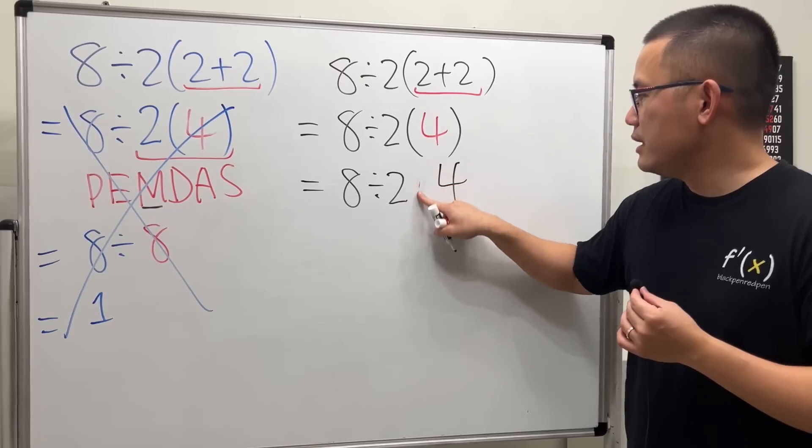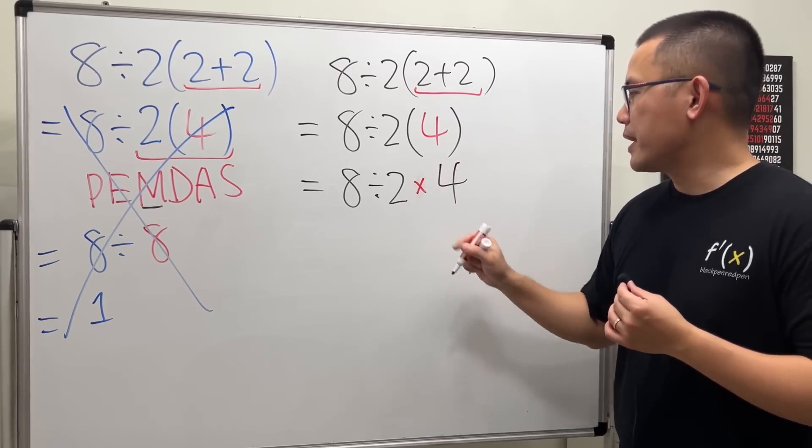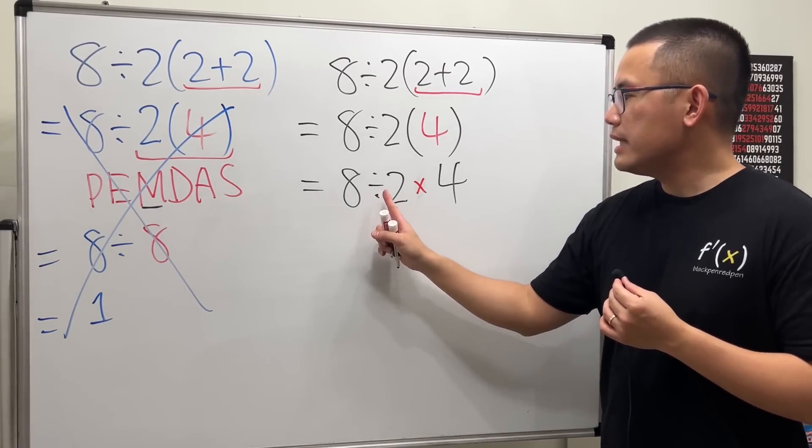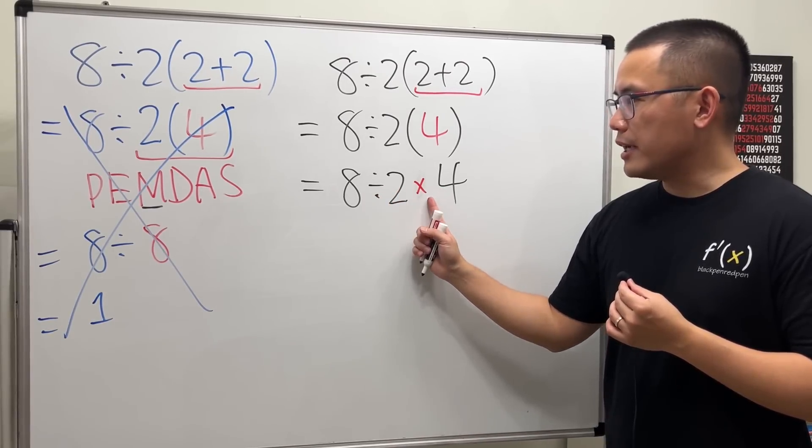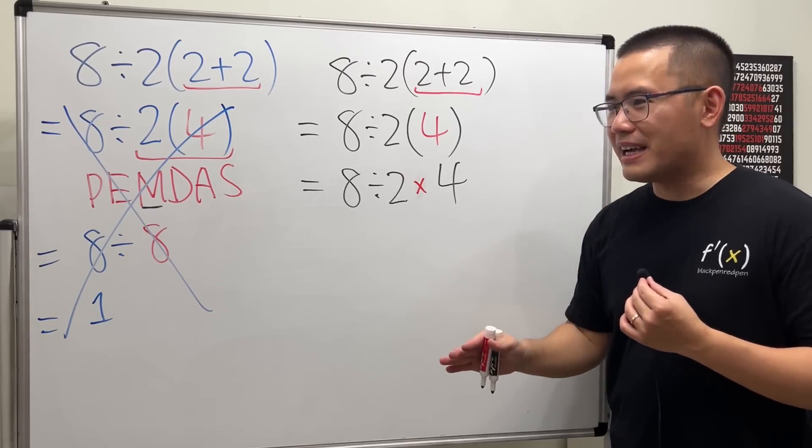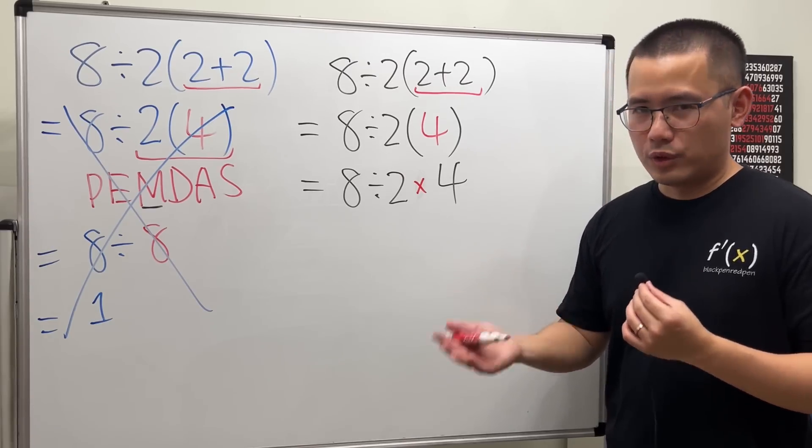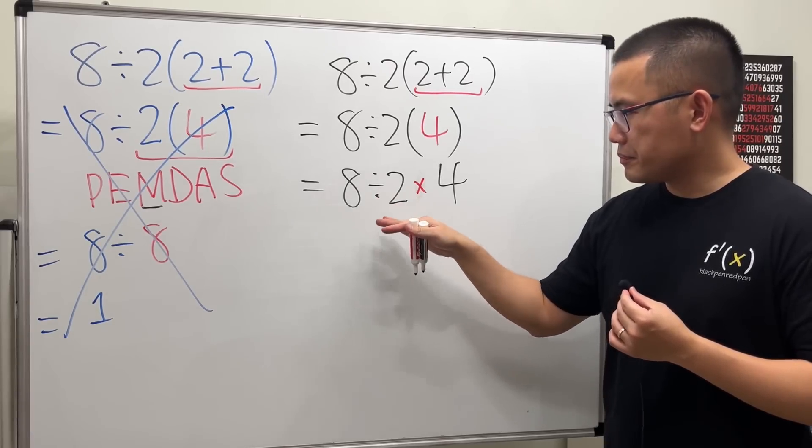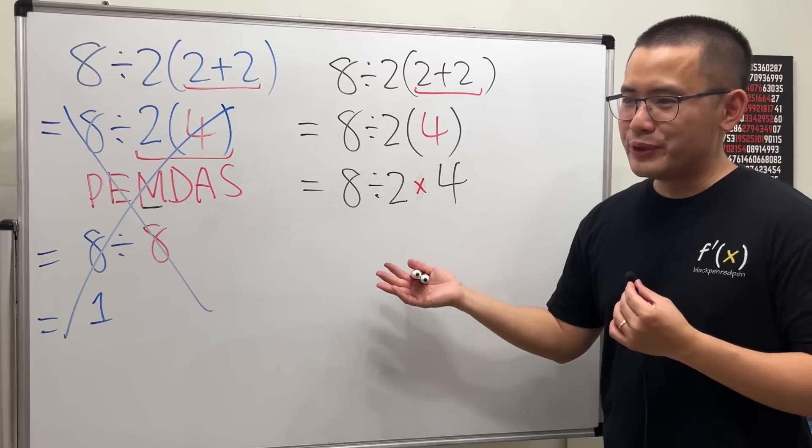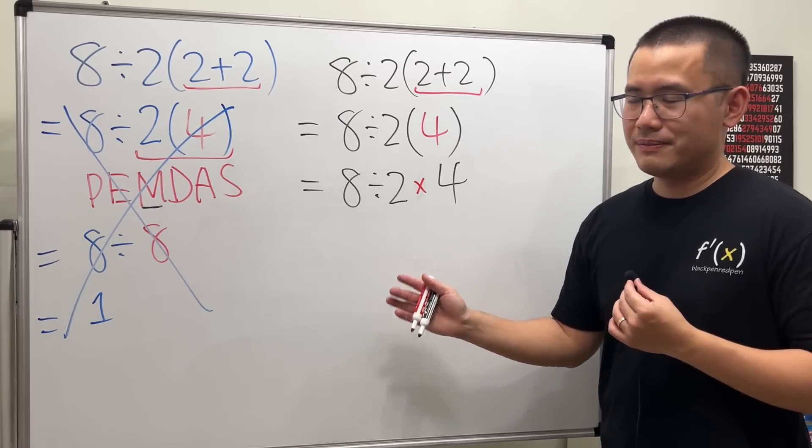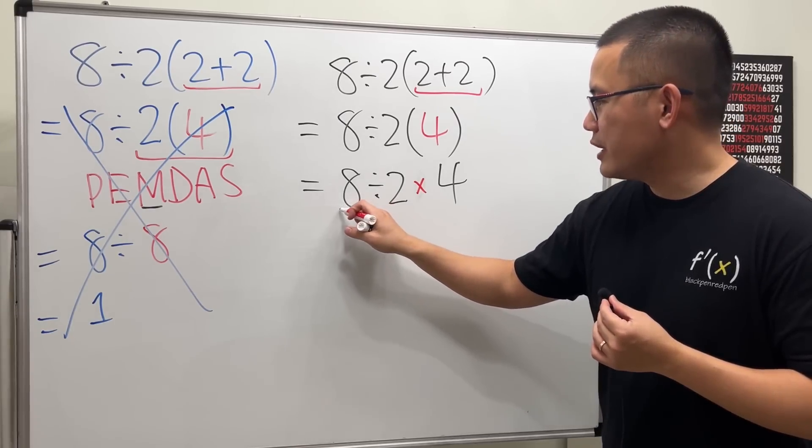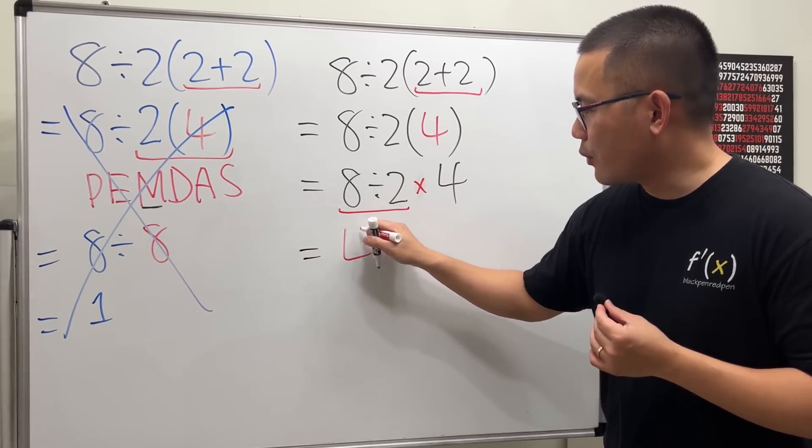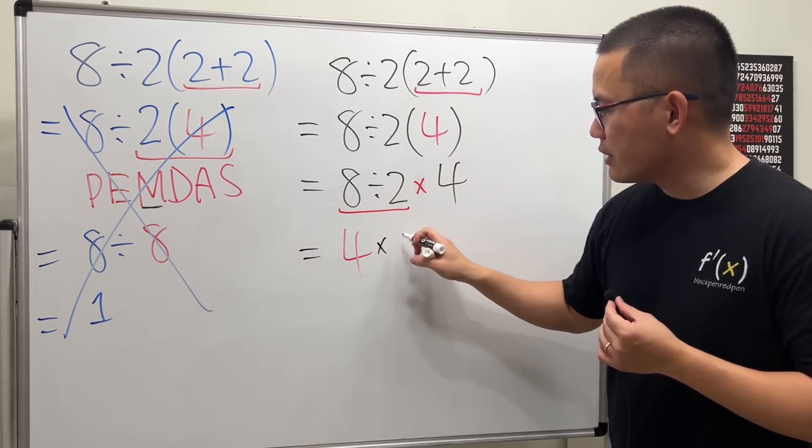Then we see that division and multiplication, in fact, they are on the same level of the order of operations. So when you see both of them in the same expression, what you do is you just do it from left to right. So you approach it from 8 divided by 2 first, which is 4, and then you carry down the times 4, and then you end up with 16. And this is the answer for that.